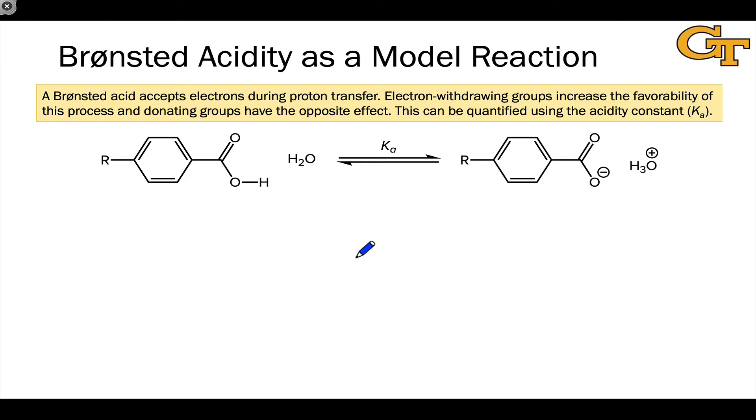By definition, in any Brønsted acid-base process, the Brønsted acid is accepting electrons. More broadly, we could say that the Brønsted acid is acting as an electrophile or a Lewis acid at the same time. And so for example, in this model reaction right here, we can see that the benzoic acid is accepting electrons, and it does so as it gives up a proton to water.